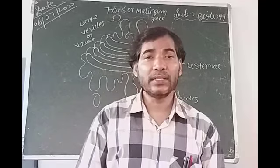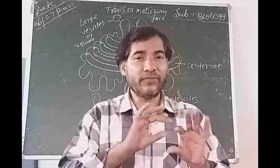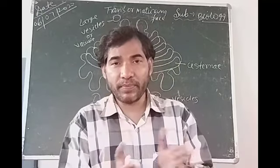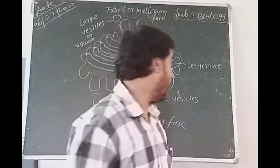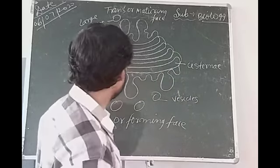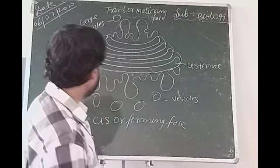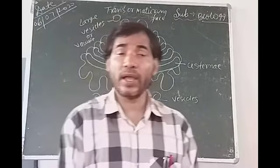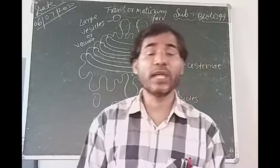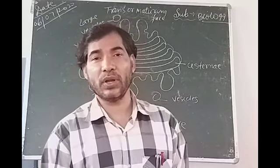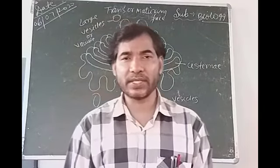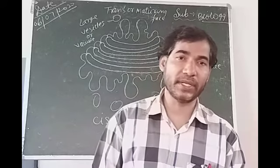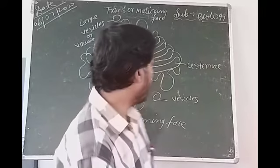The cisternae are many flat tubular structures which are present parallel to one another. You should know, Golgi apparatus is made from a smooth endoplasmic reticulum — it is a membranous structure which is made from smooth endoplasmic reticulum.